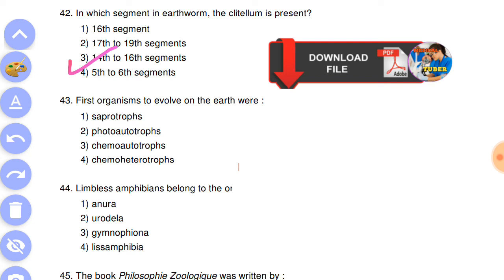Next question: first organisms to evolve on the earth were answer is the fourth, chemoheterotrophs. Next question: limbless amphibians belong to answer is the third, Gymnophiona.